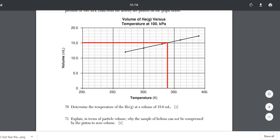Question 71: explain in terms of particle volume why the sample of helium cannot be compressed by the piston to zero volume. Real simple, helium is made up of atoms. The particles that make up helium are not going to go down to zero. Helium atoms are present and they take up space or they have volume.